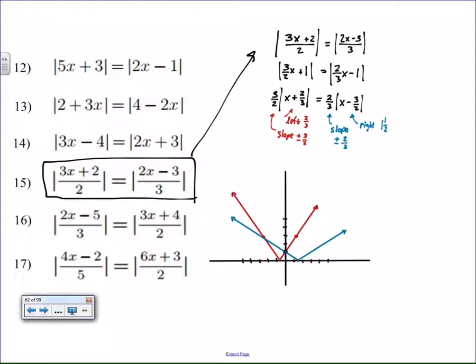Using the same kind of reasoning, this time I'm going to go right 1 and a half, count over 3 up 2, count back 3, up 2, and that gives you a couple of points.